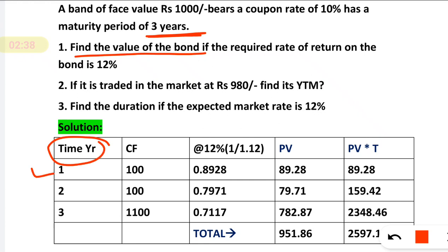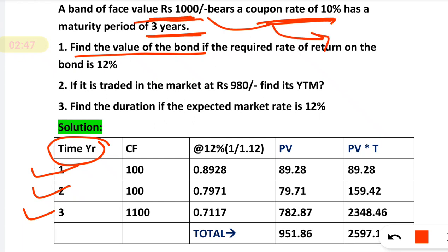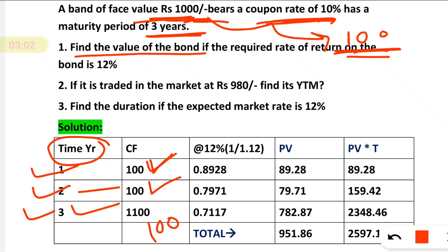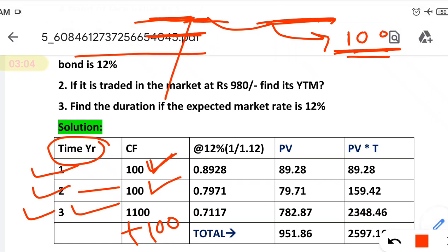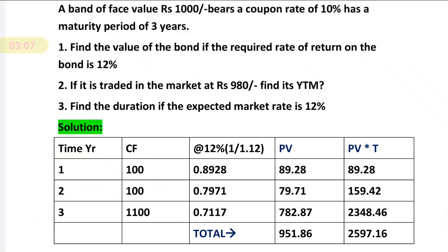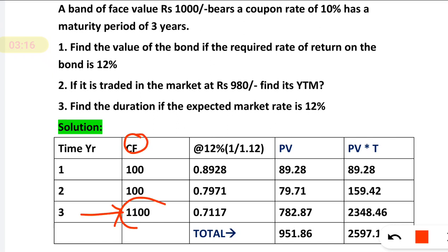So time will be first year, second year, third year. The coupon rate is 10% and face value is 1000, meaning every year you get 10% of 1000 = 100 rupees. For second year you get 100. For the third year, you get 100 coupon plus 1000 face value, so the cash flow in year three will be 1100.